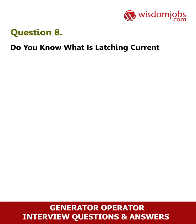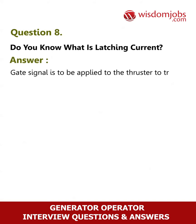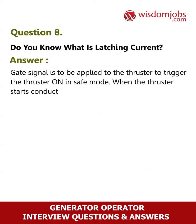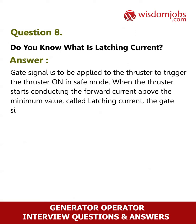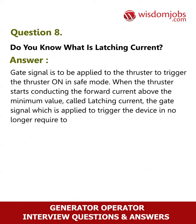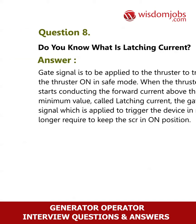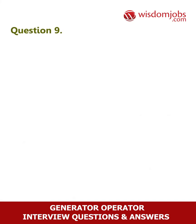Question 8: What is latching current? Answer: A gate signal is applied to the thyristor to trigger it on. When the thyristor starts conducting the forward current above the minimum value called latching current, the gate signal which was applied to trigger the device is no longer required to keep the SCR in the on position.